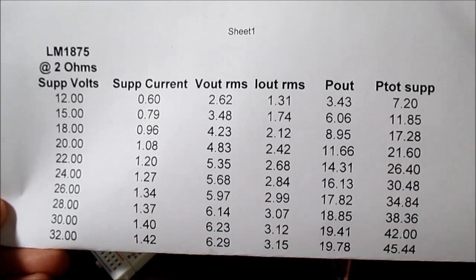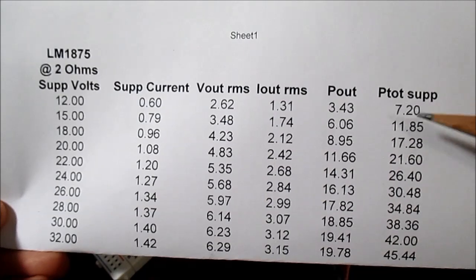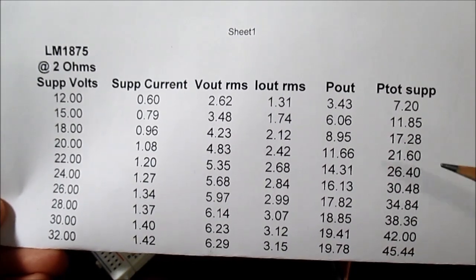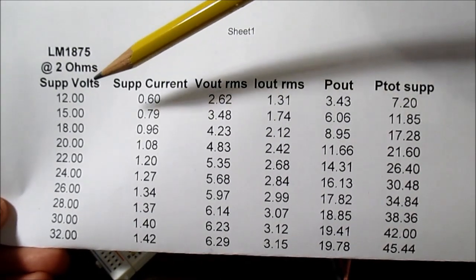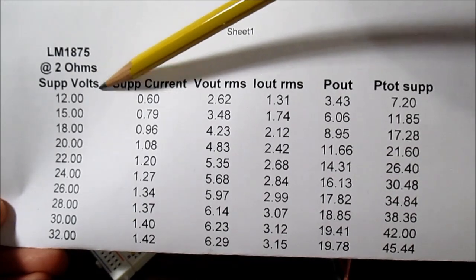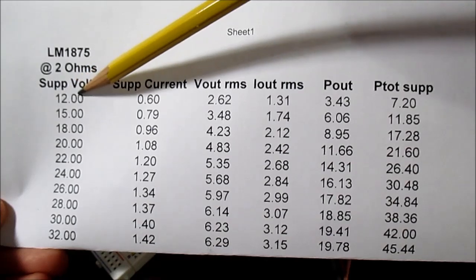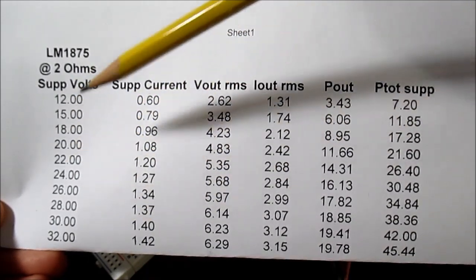Here are the results. I put it into a spreadsheet so I didn't have to do all these calculations. These are the 2 ohm results. Let me explain the columns. This is the power supply voltage, total power supply voltage. So if you see 12, it's actually plus and minus 6 volts, and so on so forth.